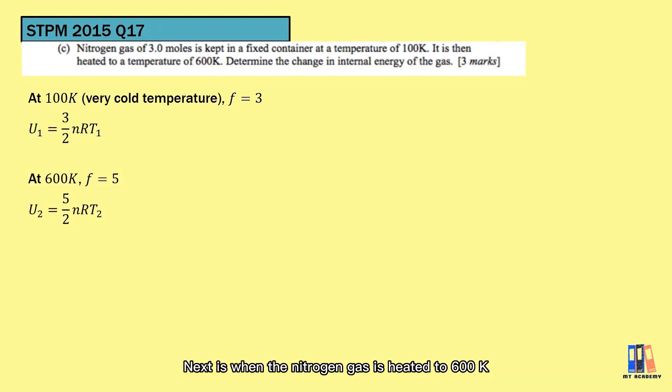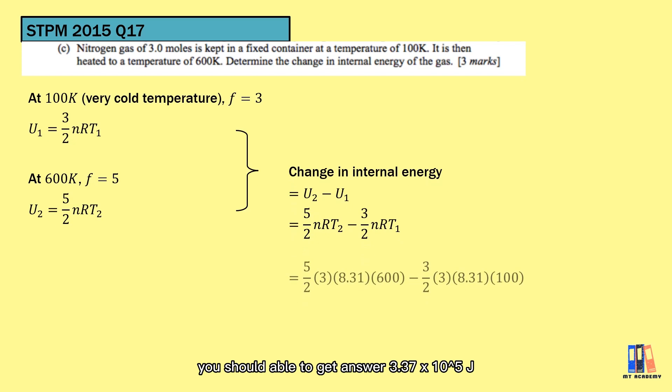Next is when the nitrogen gas is heated to 600 Kelvin. We know that the degree of freedom for a diatomic molecule is equal to 5, hence the internal energy is equal to 5 over 2 nRT. So the question asked about the change in internal energy, just take the final minus the initial internal energy. You should be able to get the answer of 3.37 times 10 to the power of 5 J.